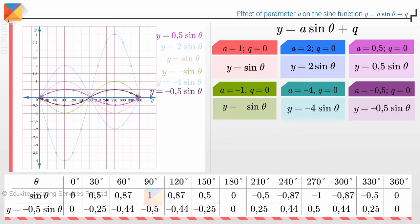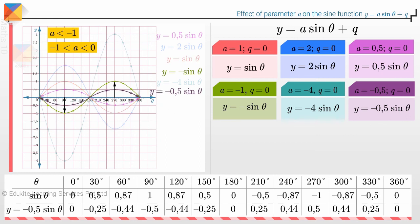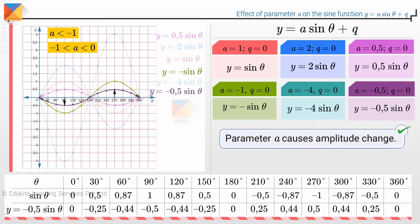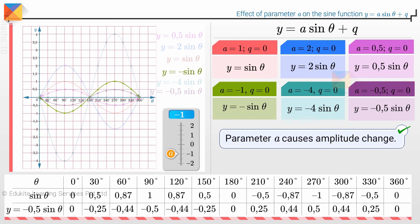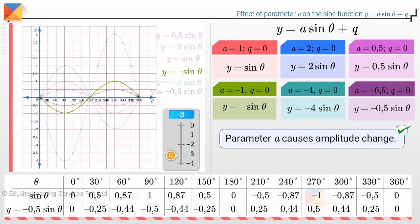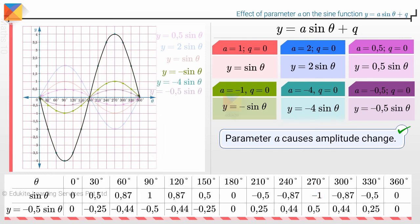The value of a affects the amplitude of the graph. When a is less than minus 1, the amplitude increases. But when minus 1 is less than a less than 0, the amplitude decreases in comparison to the graph of y equals minus sine theta. We can also say that a causes an amplitude change. As a increases from minus 1 to minus 0.5, the graph of y equals a sine theta is compressed vertically. And when a decreases from minus 1 to minus 4, the graph is stretched vertically. This is the opposite of what happens when a is positive.